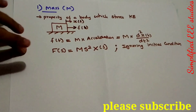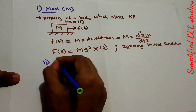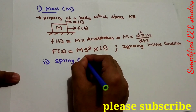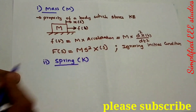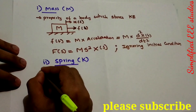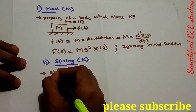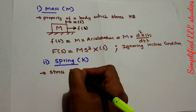The second element is Spring, denoted by the letter K, where K is generally the spring constant. Spring is an element which stores potential energy.